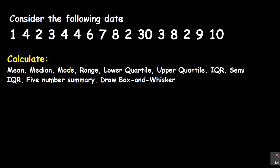In this lesson I'm going to cover the mean, the mode, and the range — just these three things. Now before you do anything, the first thing you need to check is whether your data is grouped or not grouped. You can see that this data is not grouped.